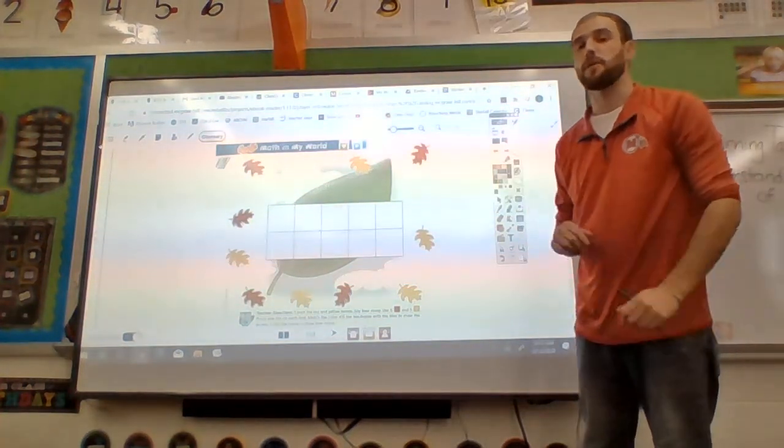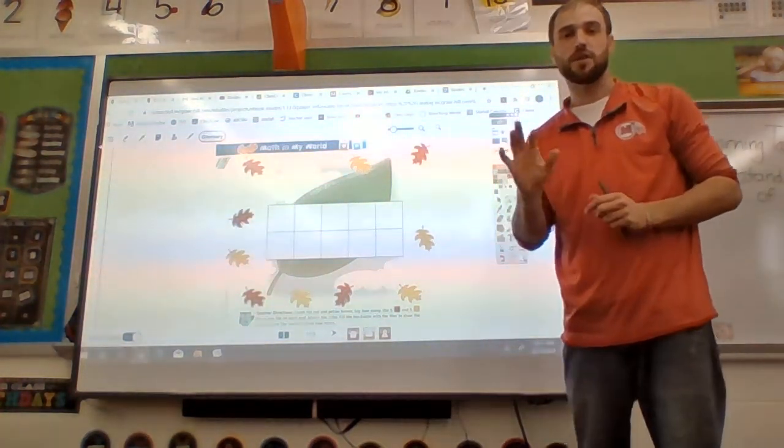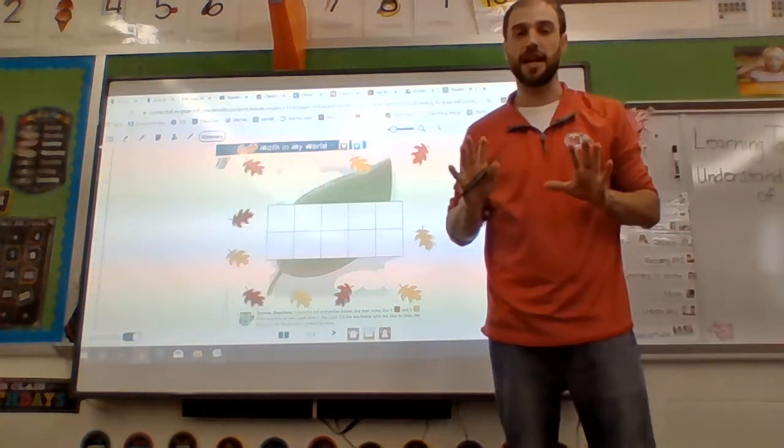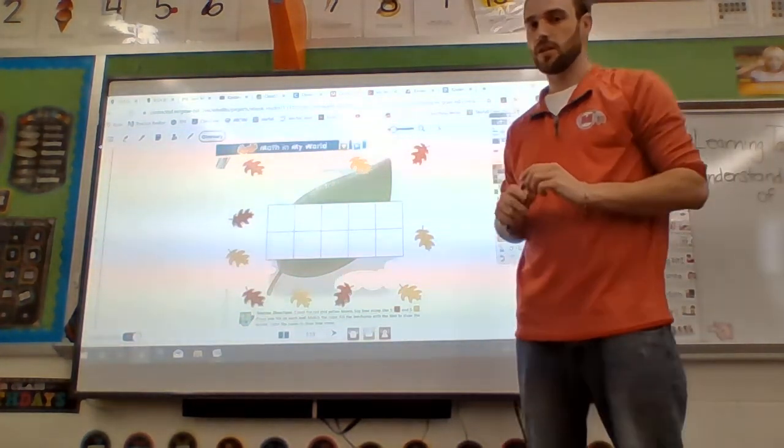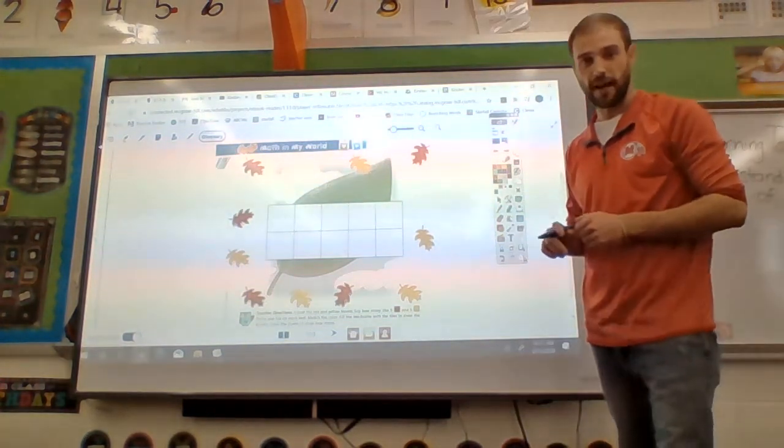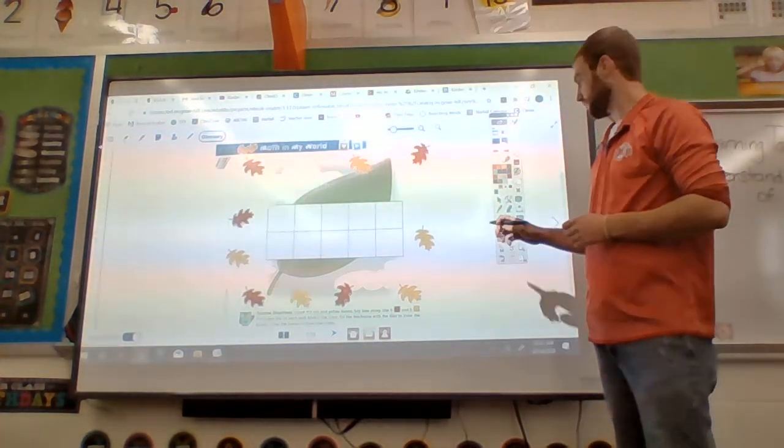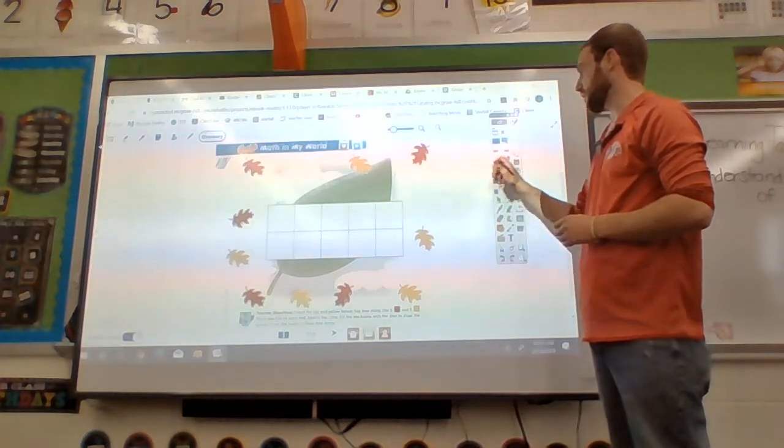Hi boys and girls, welcome back. Today we're on Chapter 2, Lesson 5. We're going to focus on counting to 10 and understanding when we see a group of 10. You're going to need a red crayon and a yellow crayon. We're going to start with our red.